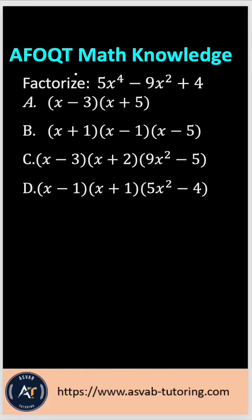Let's practice this math knowledge question for the Air Force Officer Qualifying Test AFOQT. The question asks, factorize 5x to the 4th power minus 9x squared plus 4. In order to solve this problem, what do you have to do?